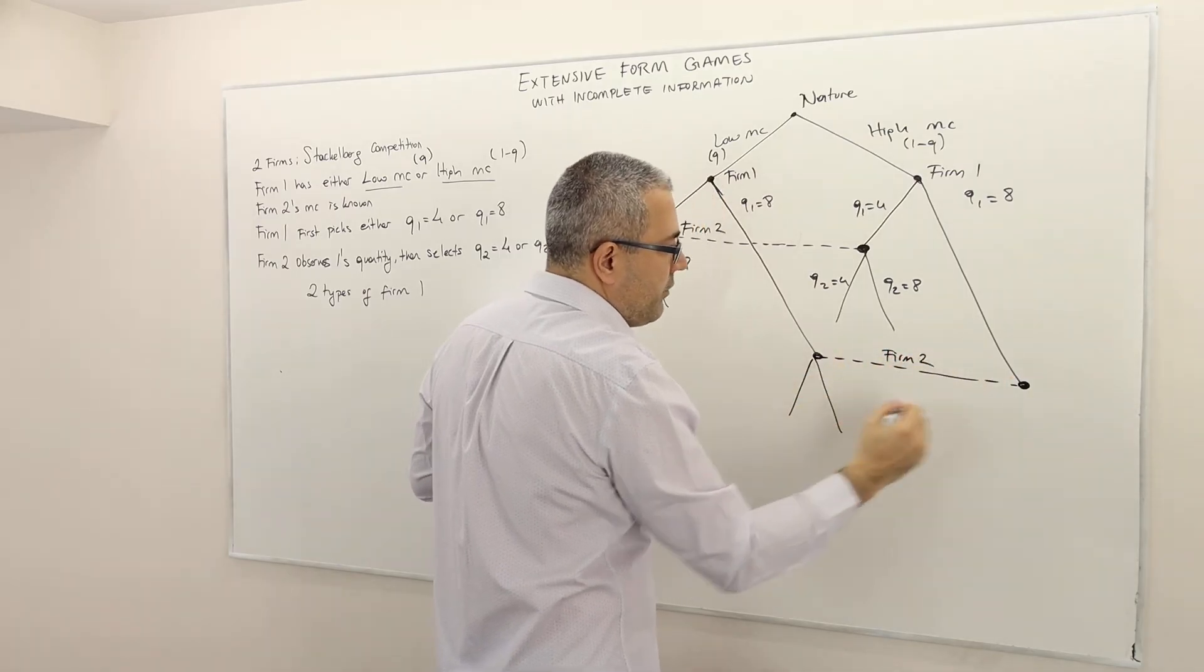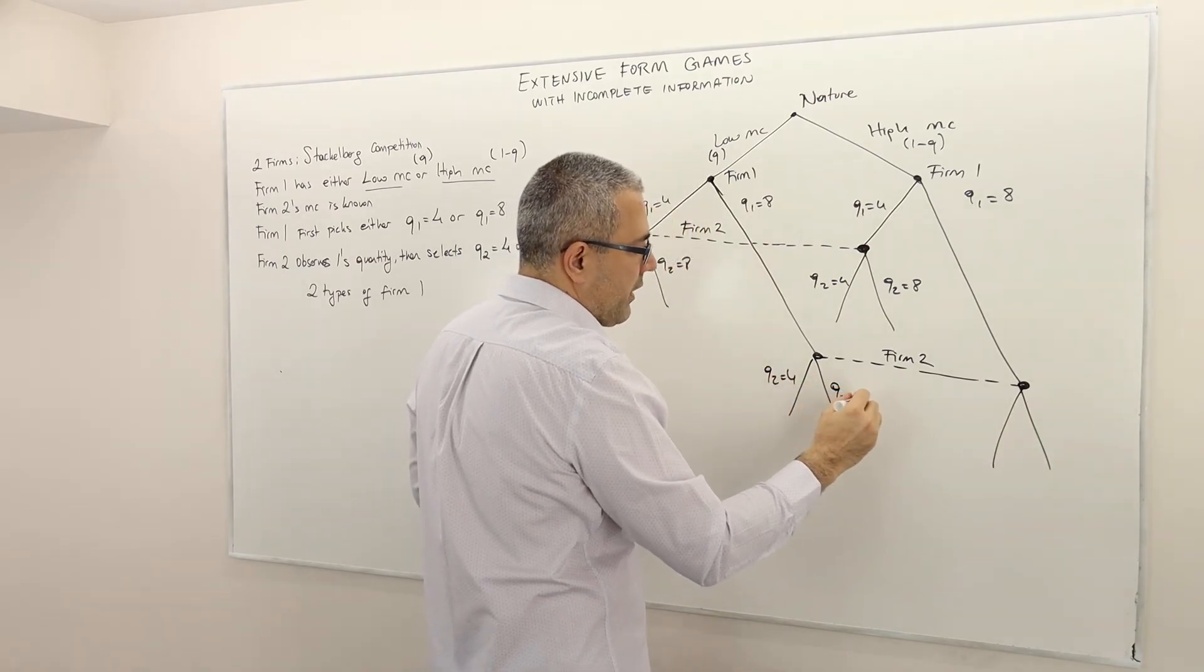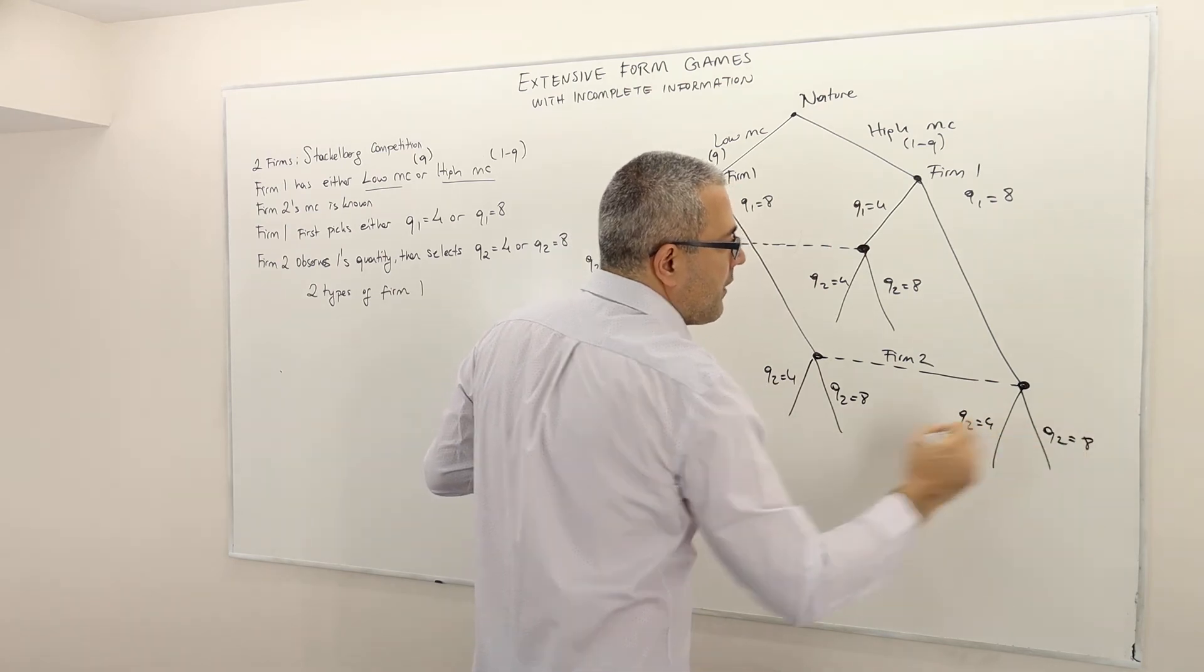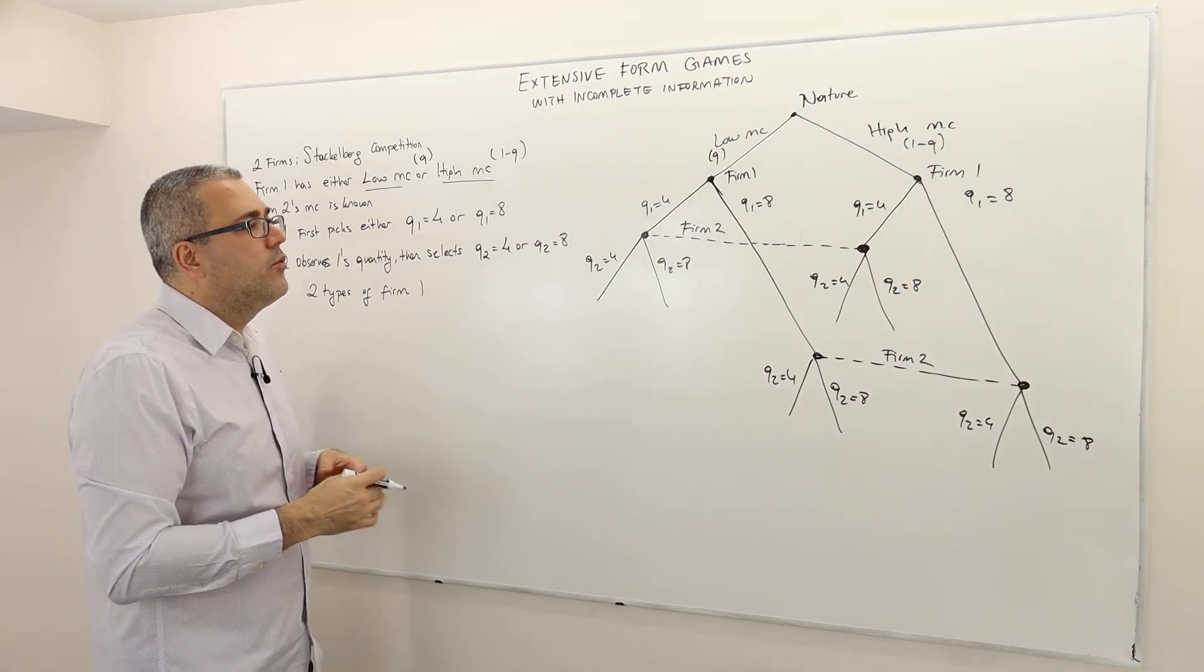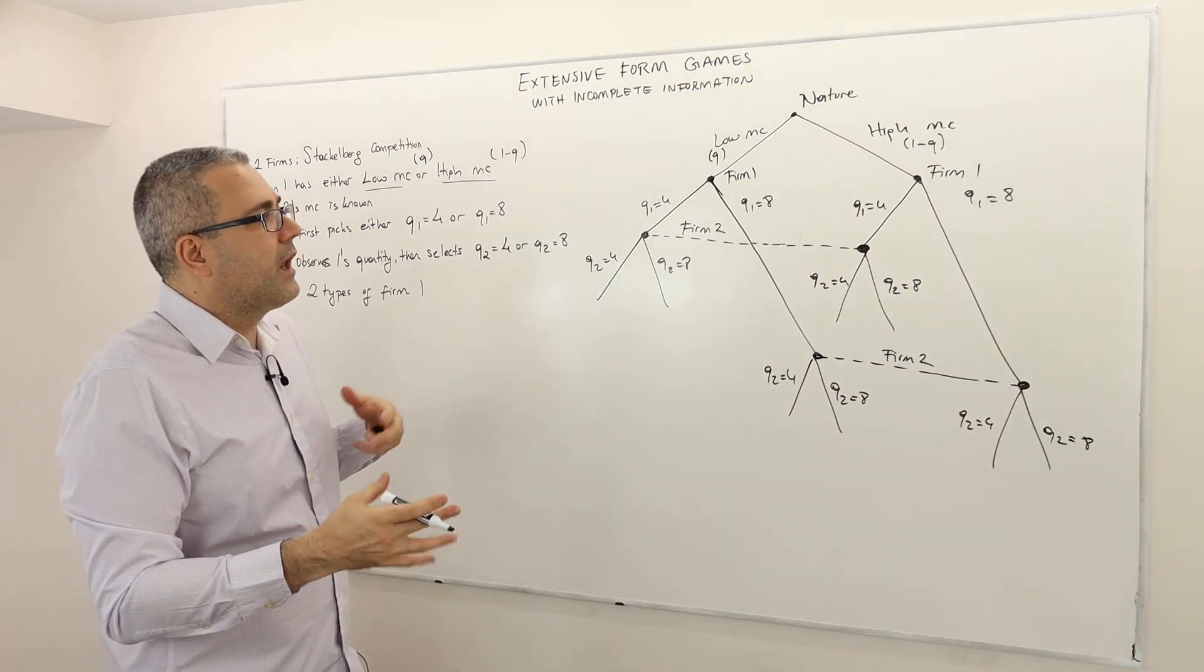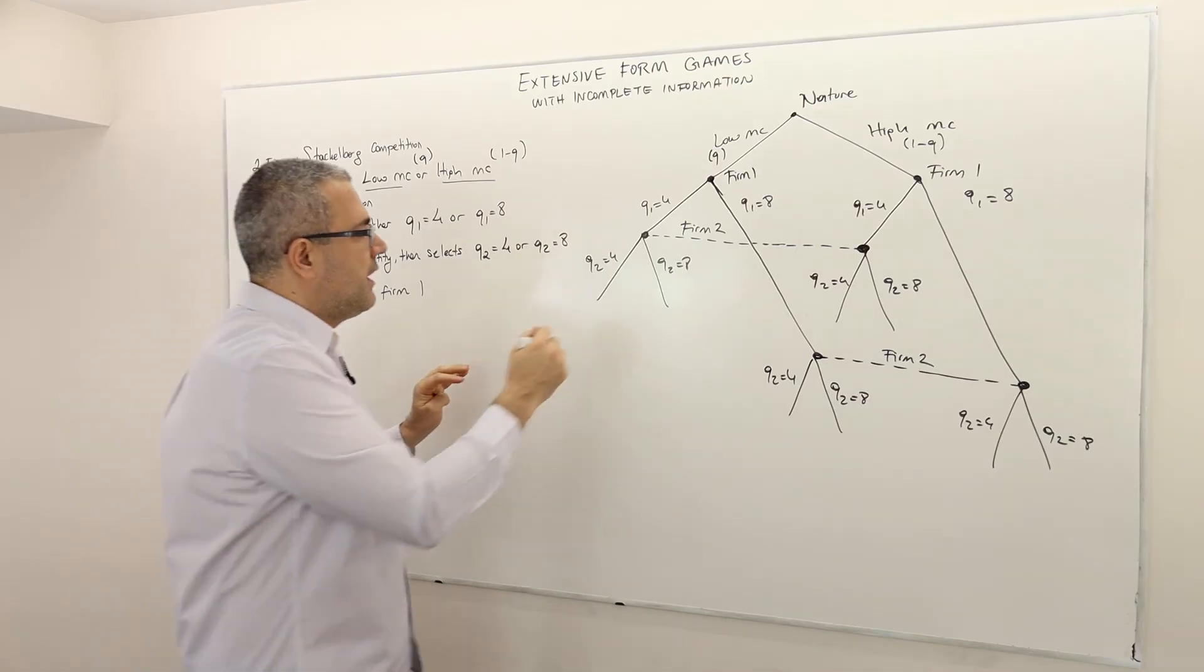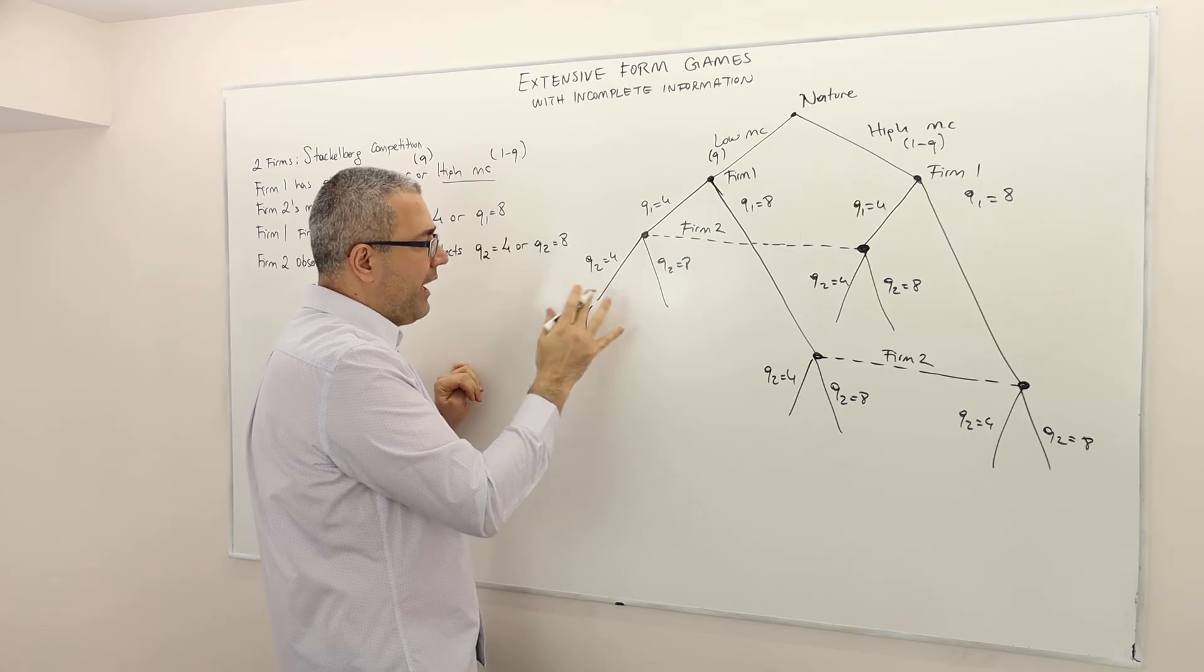And so this node and this node must be the same info set for firm 2. And firm 2 again chooses either 4 units of quantity or 8 units of quantity. And then the game is over. Then the payoffs. Well, I'm not going to, but well, just for the sake of completeness, let me make up some payoffs here.